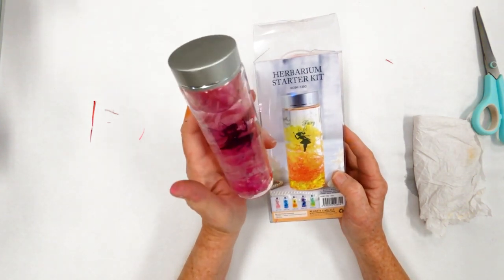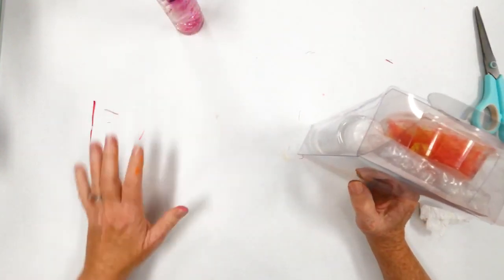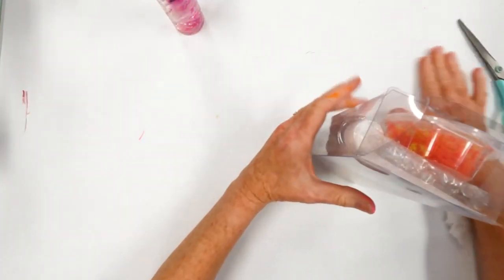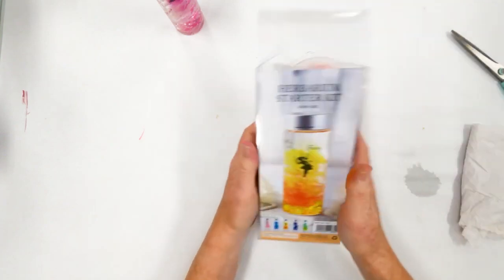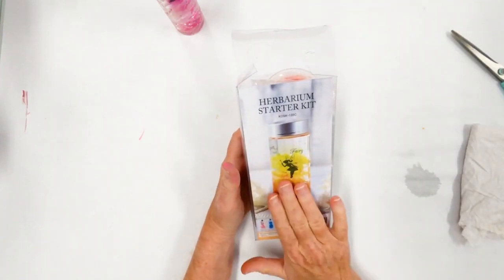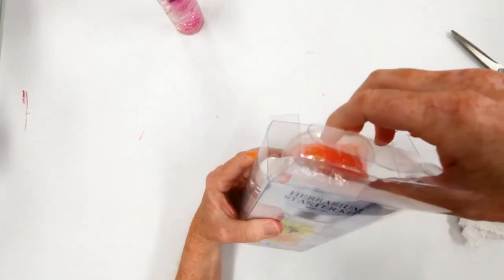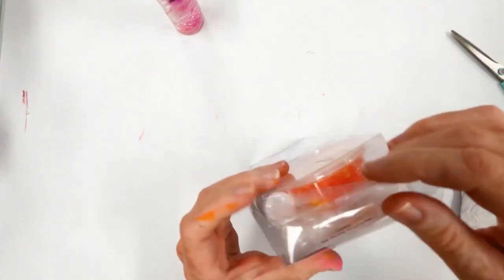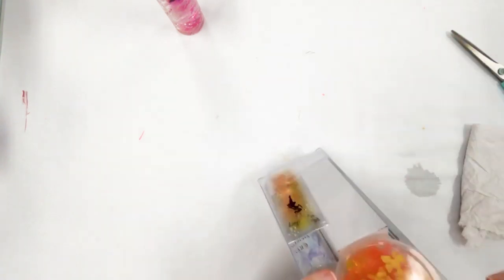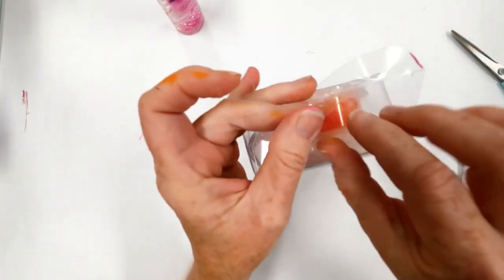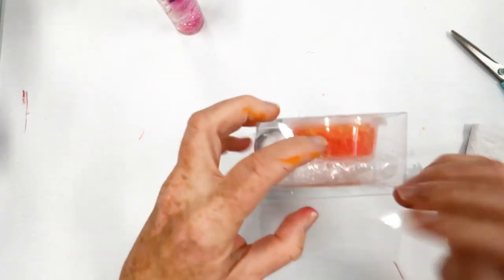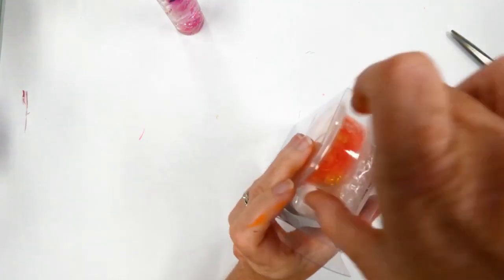This silicone gel is not, I repeat, not to consume. Don't drink it. It's only to put in this jar. So let's take a look and see what's in here. I already cut mine right here. You guys might struggle a little because there's a clear dot you need to peel off and then get into your kit.